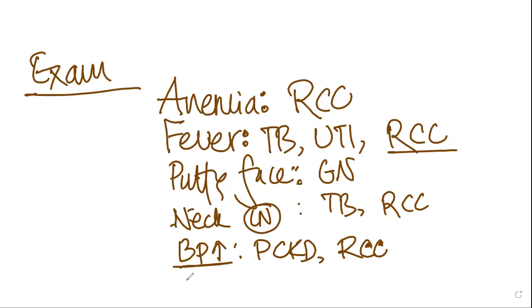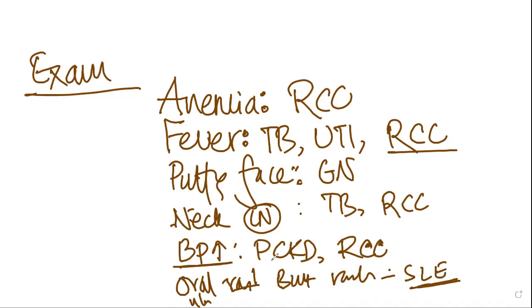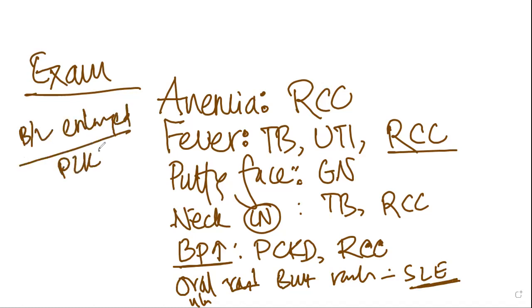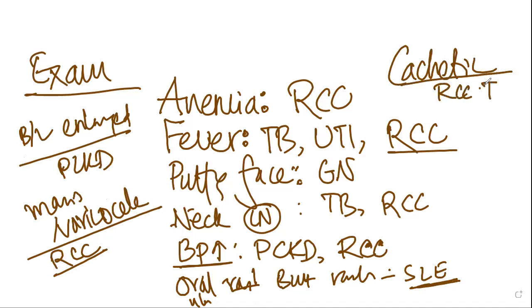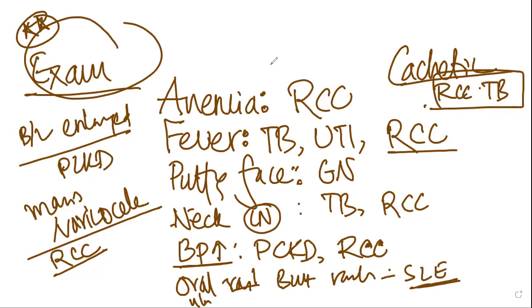On oral and skin examination, look for oral ulcers and butterfly rash around the face — this might suggest SLE as a differential. On abdominal examination, look for bilaterally enlarged kidneys; a mass or bruit may suggest RCC. If the patient is cachectic with weight loss, that might suggest RCC or tuberculosis.